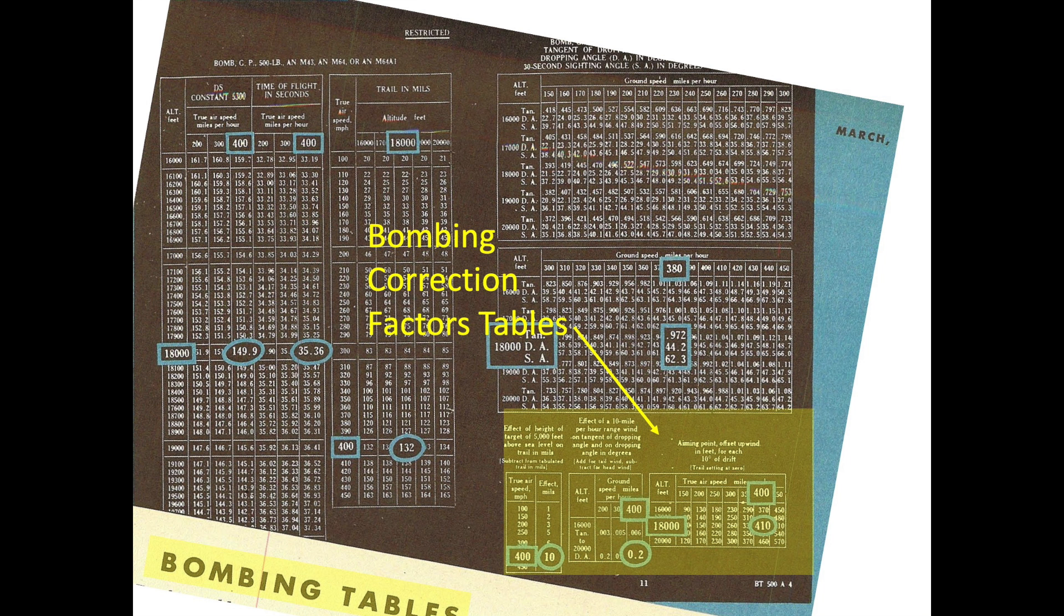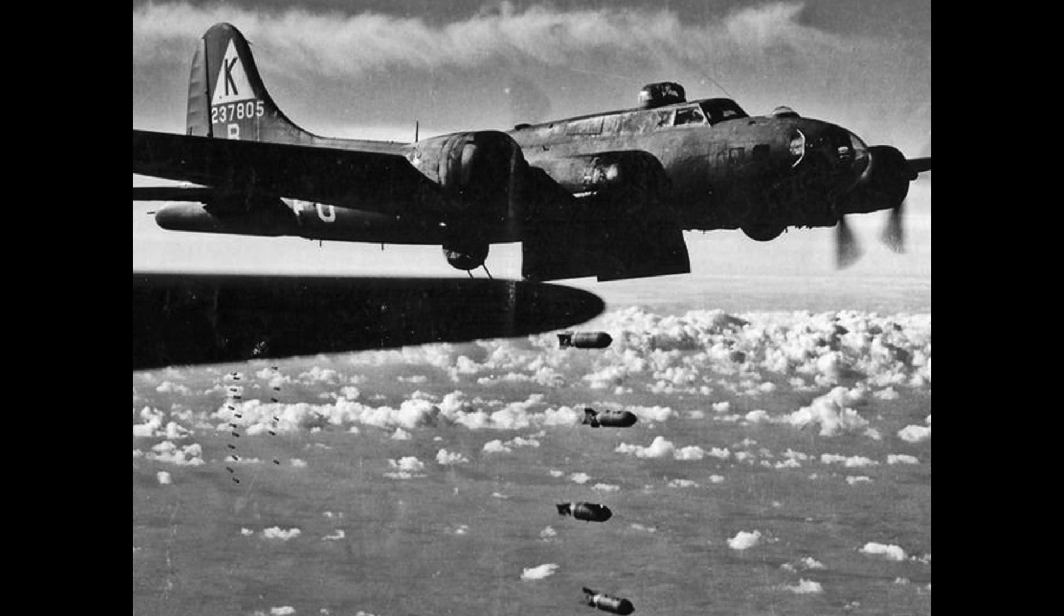The bombing tables provide corrections, although not covered here, accounting for the target's height above sea level, head or tail winds, and drift angles. The corrections are applied to the trail or drop angle. If you've enjoyed this video, please consider liking, commenting, or subscribing to the channel World War II U.S. Bombers.